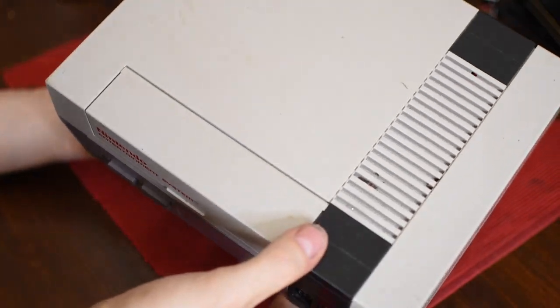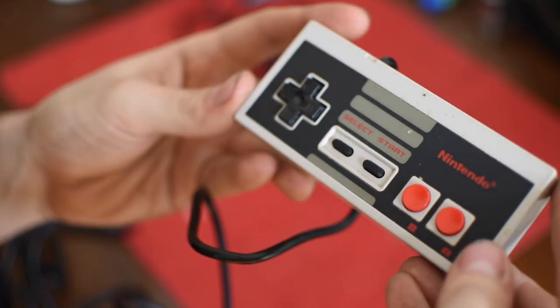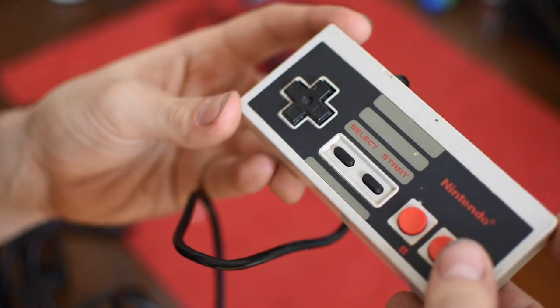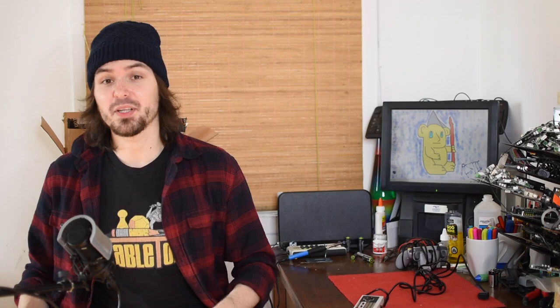Pretty much everyone's familiar with the original NES, its design and how its controller look. But not everyone out there knows that there was actually a second version of the NES released long after the first one had come out. This version was actually released after the Super Nintendo had come out. It's what's known as the top loader.